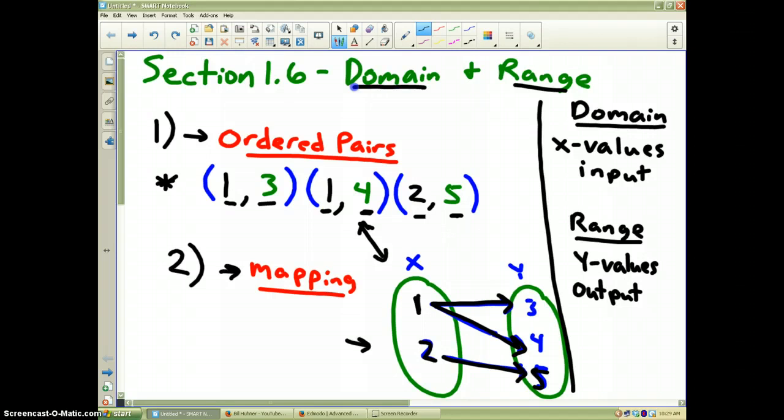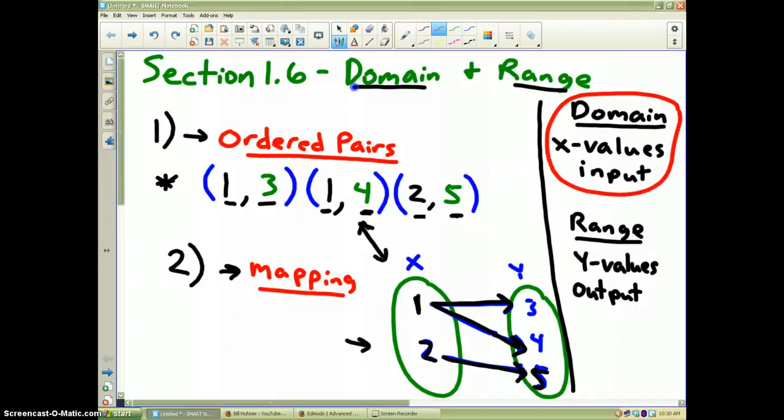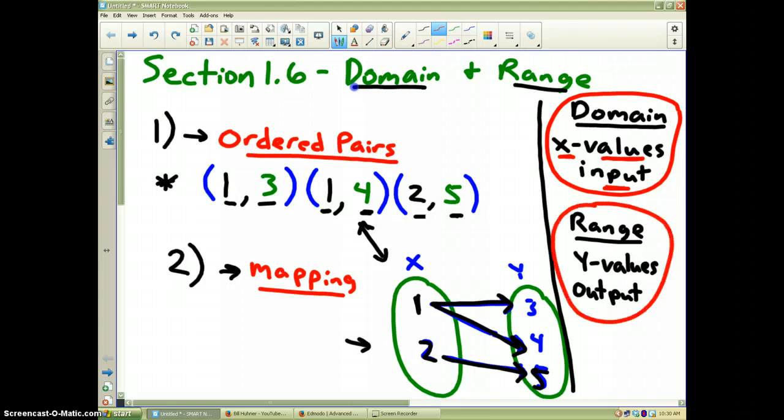Now, you're going to see in section 1.6, they talk about mappings, and that is what a mapping is. The two most important words in this particular video example, domain and range, as I wrote way over here on the right, domain are always the x values, always. Another word that our book uses, they're the input values. Range is always the y values, and it's sometimes in our textbook called the output.